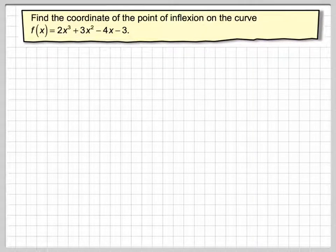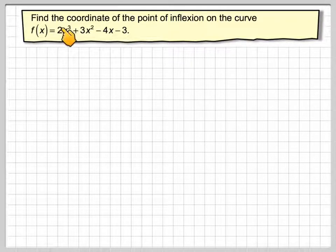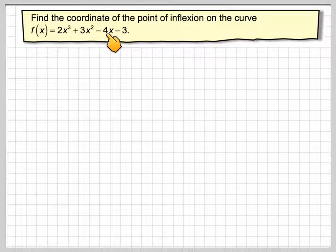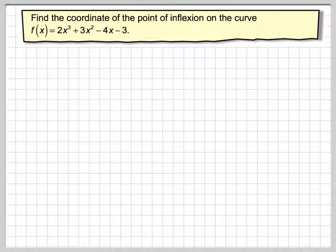Hello again. In this video we're going to look at points of inflection and the idea of concavity. The question is: find the coordinate of the point of inflection on the curve f(x) = 2x³ + 3x² − 4x − 3. Before we look at the algebra of this, let's have a look visually at what we actually mean.